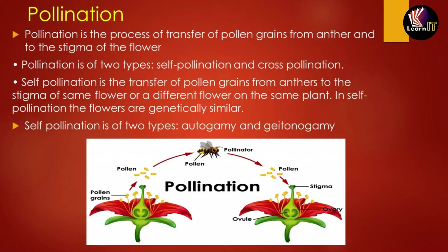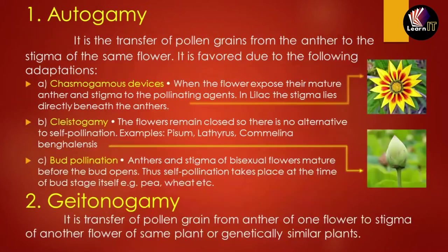In the diagram, you can see that pollen grains from one plant are transferred with the help of some agents, known as pollinators, to another flower of the same plant. The species or plant remains the same — this kind of transfer is known as self-pollination.